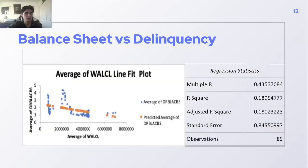Looking at balance sheet versus the delinquency rate, once again we see a pretty low correlation. When the Fed is purchasing financial assets, it's not bailing out everybody — it's bailing out some. Not all delinquent businesses are saved from balance sheet expansion, so that's what we see: a generally low correlation between the two.